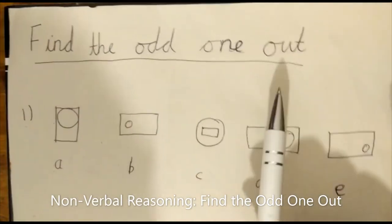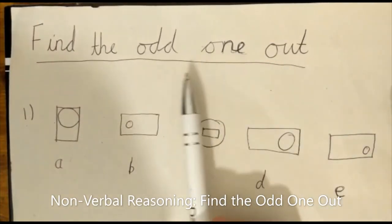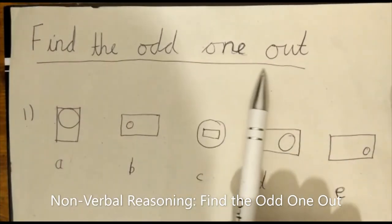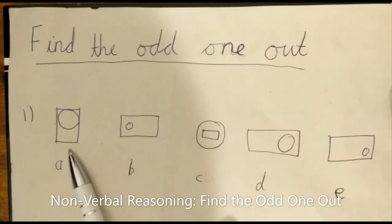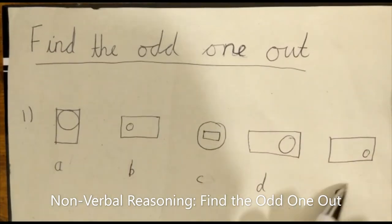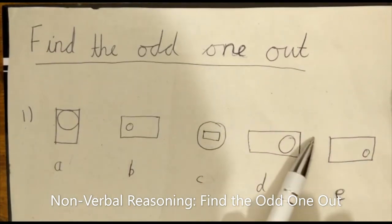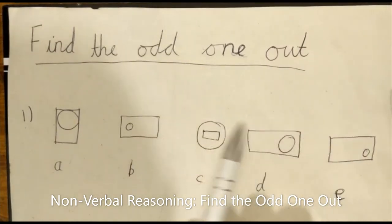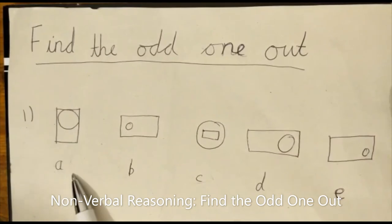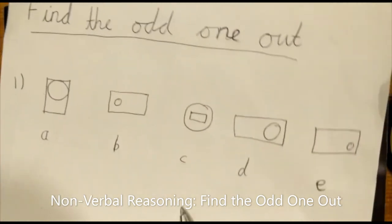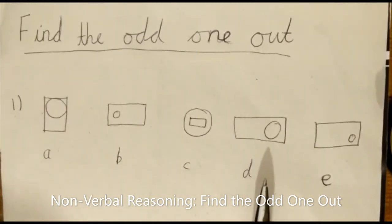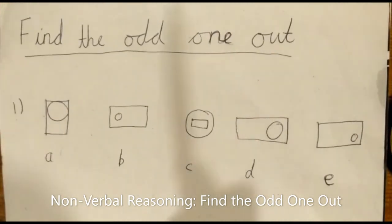Find the odd one out. Odd one out means finding the most different one from all the other options. So we have option A, B, C and D.